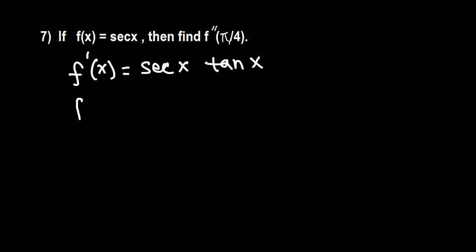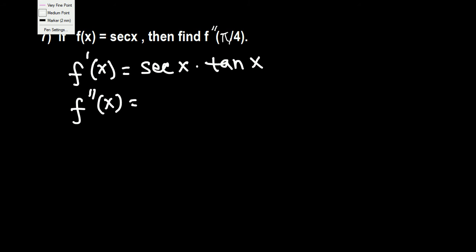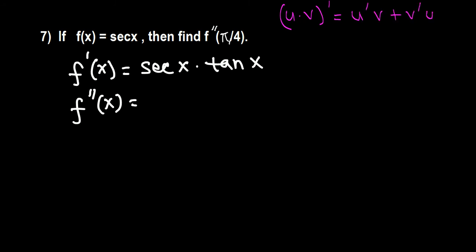Now we need to find another derivative, which is the second derivative. To find the second derivative we now have a product of two functions, so we need to use the product rule. When we have u times v, the product rule is u prime v plus v prime u.